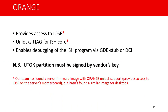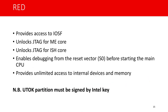Es gibt zwei Arten: Orange und Rot. Hersteller können JTAG-Debug-Features benutzen, und diese Partition muss mit einem digitalen Schlüssel vom Hersteller unterzeichnet sein. Noch interessanter ist die rote Öffnung, das Red Unlocking. Das gibt vollen Zugriff auf die internen Geräte.